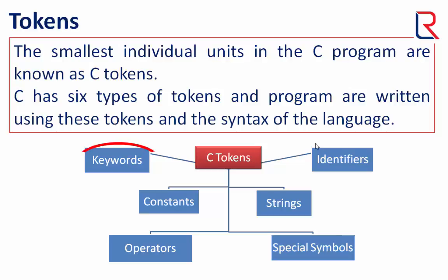Keywords are reserved words which have been assigned specific meaning in the context of C language programs. C language has 32 keywords, for example: auto, break, float, while, etc.